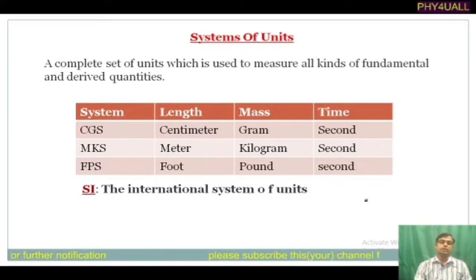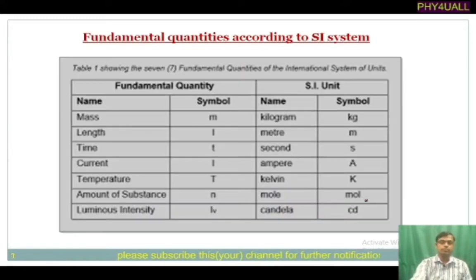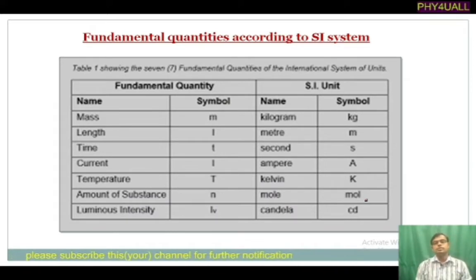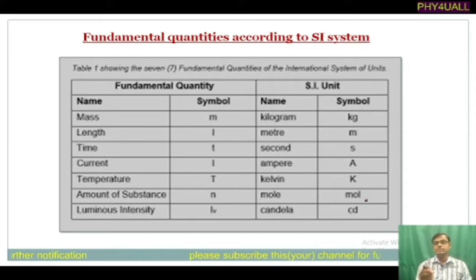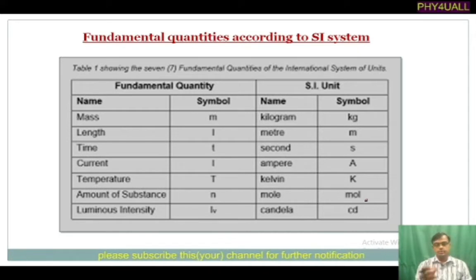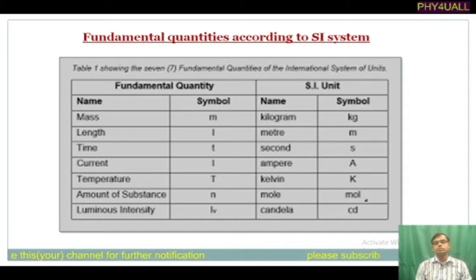Now let's move to the SI system in detail. According to the SI system, there are seven basic physical quantities. As you can see in the table, there are seven: mass, length, time, temperature, electric current, amount of substance, and luminous intensity.